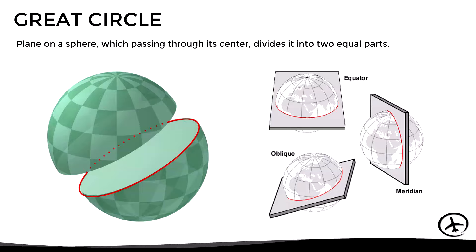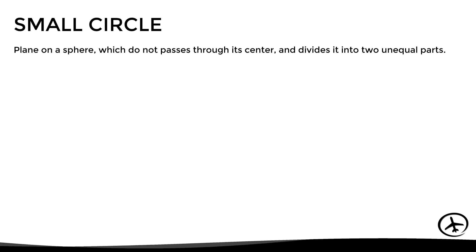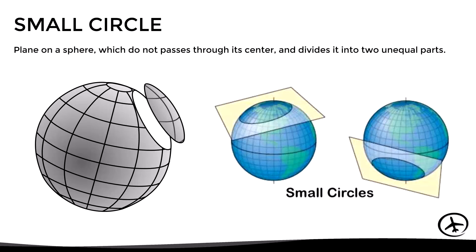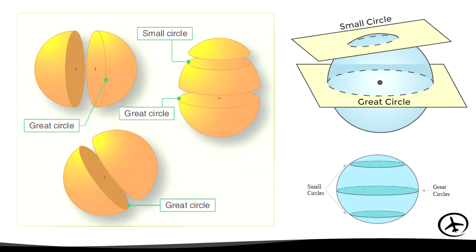On the other hand, a small circle is a plane on a sphere which does not pass through its center and therefore divides it into two unequal parts. In other words, any circle on a sphere that is not a great circle will be a small circle. Here we can see some examples of great and small circles.